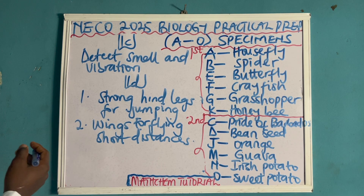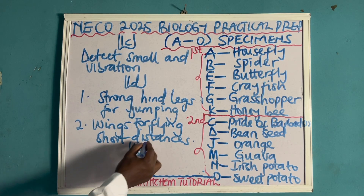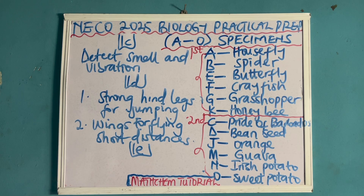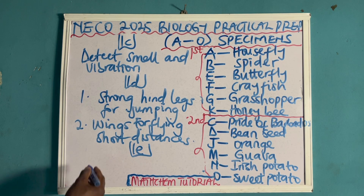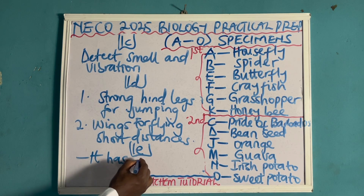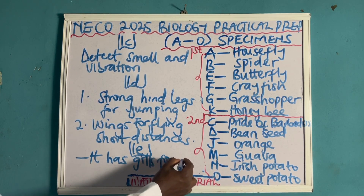They can still ask you that you should state one way specimen F is adapted to its aquatic nature. Specimen F is crayfish. How is it adapted to its aquatic nature? It has gills for breathing in water.